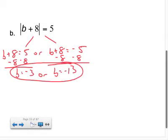And you can check your answers, just plug them back in. If I plug in negative 3 here, negative 3 plus 8 is positive 5. The absolute value of positive 5 is 5. If I plug in negative 13, negative 13 plus 8 is negative 5. The absolute value of negative 5 is positive 5. Both solutions check out.